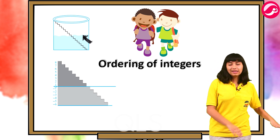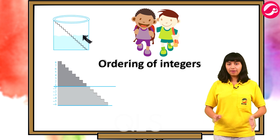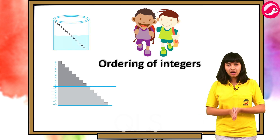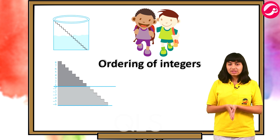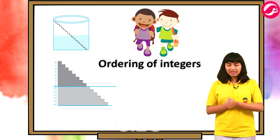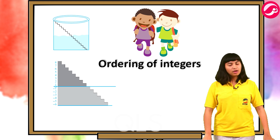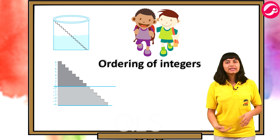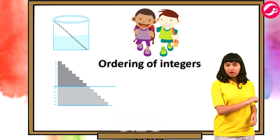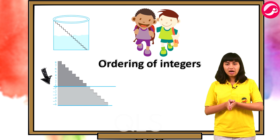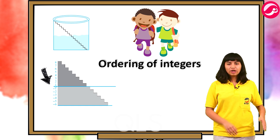Woh well pe gayi aur unhone 8 sidiyan neeche utri toh woh water level pe pahunch gayi. Water level matlab us sidiyaan neeche — eight steps pe paani tha, unhone woh step mark kar di. They decided to see how much water would come during the rains — kitna water level badhega — toh unhone woh point mark kar diya.